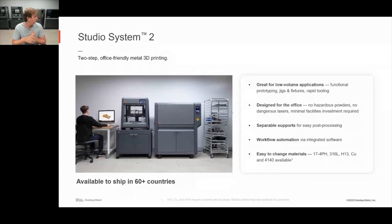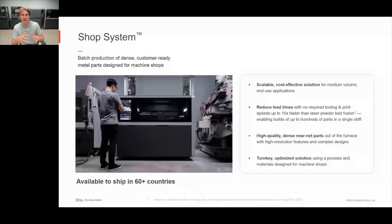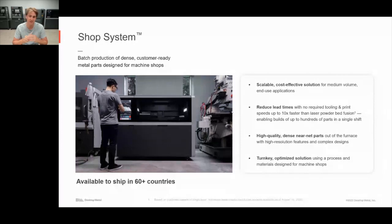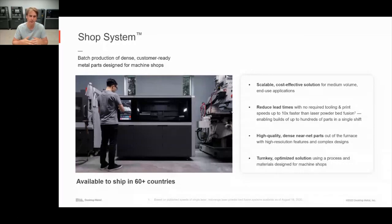The Shop System is great for batch production of dense, customer-ready metal parts designed for machine shops. It's scalable, cost-effective, great for medium-volume end-use parts, and allows you to greatly reduce lead times since there's no tooling involved. Print speeds are up to 10 times faster than laser powder bed fusion, enabling you to print hundreds of parts per day. It's a turnkey optimized solution, letting you start printing parts the same day the printer is installed.